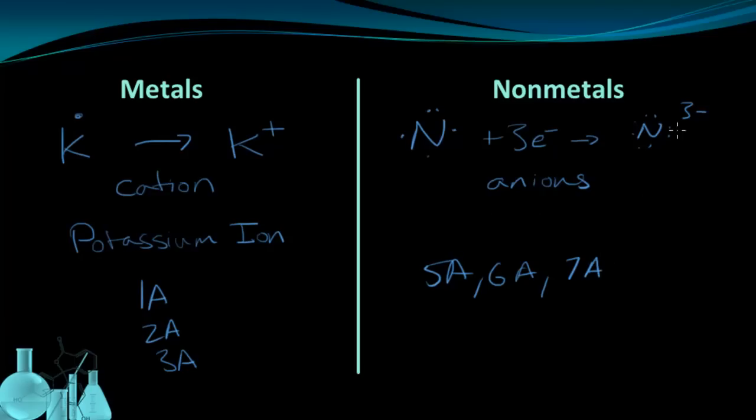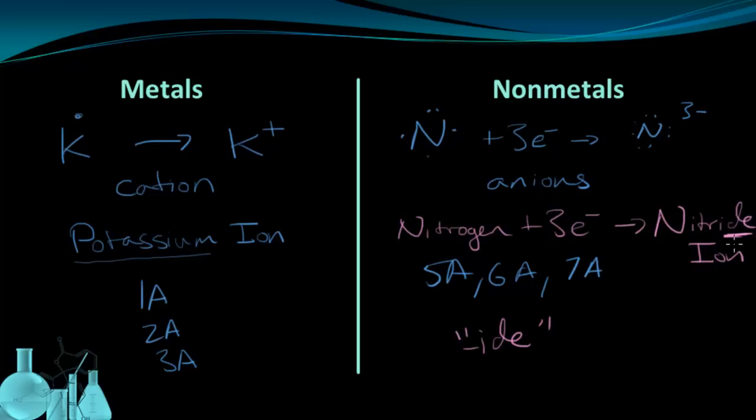Now to name non-metal anions is different than the metal ions. The metal ion naming took the element name potassium and just tacked on the word ion. For non-metals though, the actual name changes and we get the -ide ending. This -ide suffix gets attached. So nitrogen in this case, nitrogen was the element. After it gains electrons, so it gains the three electrons, becomes the nitride ion. Nitride ion, again with this -ide ending at the end to indicate that it has become an anion.